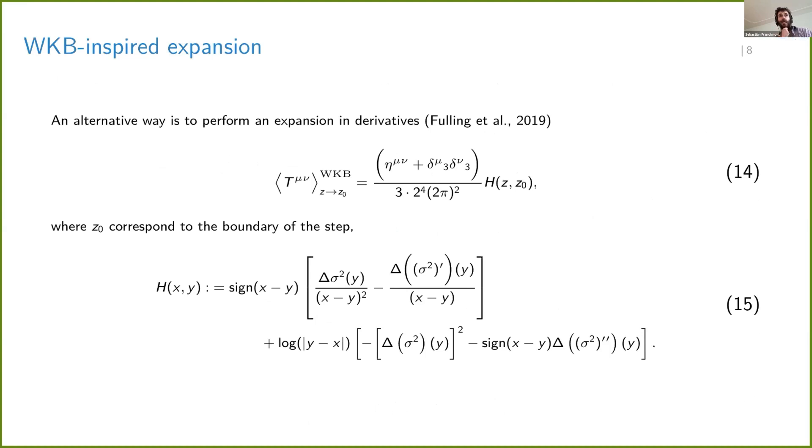You can also do some additional computation in order to compare. For example, you may also do an expansion in derivatives, the WKB computation, and you will also find the same sort of result. But in this case, you will lose the regulators. So in this case, you will see what Deutsch and Candelas were seeing in the papers from the 70s. That is that you have a sort of divergence contribution when you approach the boundary. And looking at equation 15, where you see if you have a step, you will have a contribution that goes like x minus the position of the boundary to minus two.